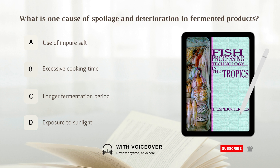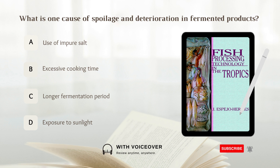What is one cause of spoilage and deterioration in fermented products? A) Use of impure salt. B) Excessive cooking time. C) Longer fermentation period. D) Exposure to sunlight.